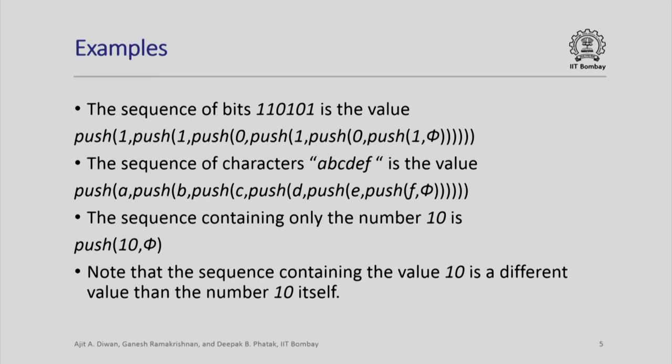Similarly, you can define a sequence of characters — the value obtained by pushing 'f' into the empty sequence, then 'e', then 'd', then 'c', and so on. The sequence containing only the number 10 is push 10 comma phi. So I have an empty sequence, I push 10 into it, I get a sequence which contains only one element, 10. Note that the sequence containing the single element 10 is a different value than the number 10 itself — this is of type sequence, whereas that is of type number, and we distinguish between these types because the operations that you can perform on them are different.